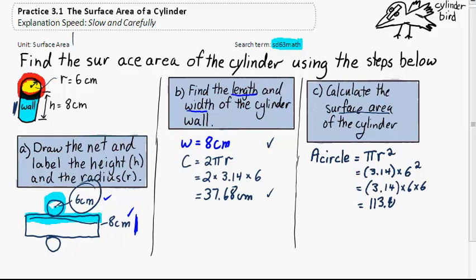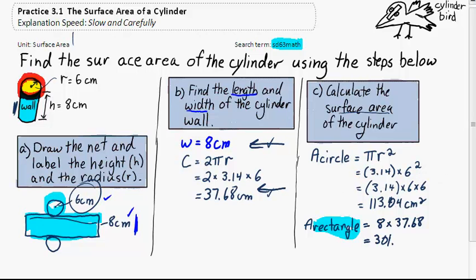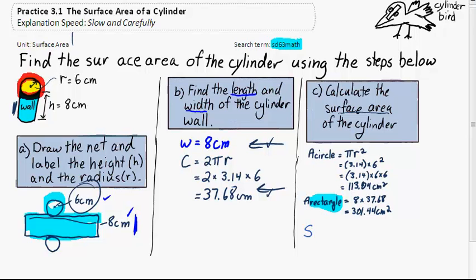This gives us 113.04 cm squared. The rectangle also has area. We worked out its length and width in part B. The length is the circumference and the width 8 times 37.68. So we write that down and then multiply them together. This gives us 301.44 cm squared. We have all the surfaces now.